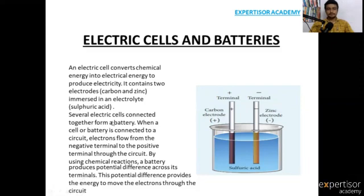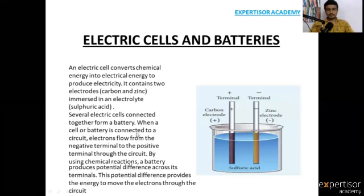Whenever you arrange the cells together, it forms a battery. This battery mobilizes the electrons. These electrons travel from the negative terminal of the battery to the positive terminal and through the circuit. By using chemical reactions, these cells produce a potential difference, which provides the energy to move the electrons through the circuit.